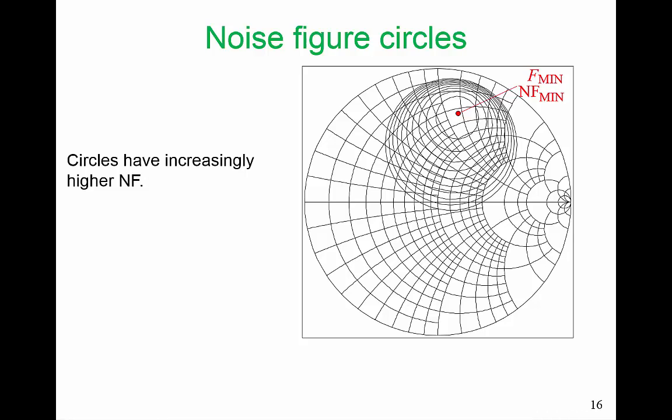this circle could be at 1.5 dB, the next one at 2 dB, the next at 2.5 dB. What these noise figure circles enable us to do is to make a tradeoff. So we have an idea of how much we're giving up our noise figure if we happen to have a reflection coefficient for the source over in this point. So this plane is called the gamma s plane.